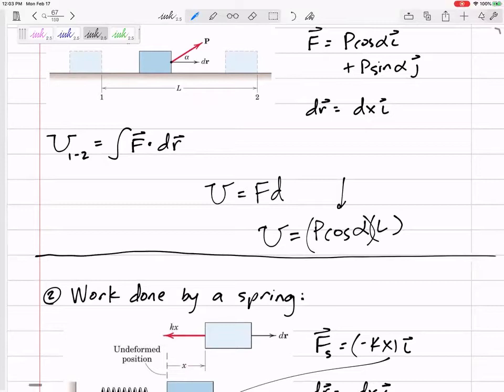What that P cosine theta L is really telling you is you take the component of the force that's in the direction of the distance and multiply it times the distance. So if you see a constant force on your problem and you want to calculate the work done by that constant force, it's the component of force in the direction of the distance times the distance. But you already knew that.